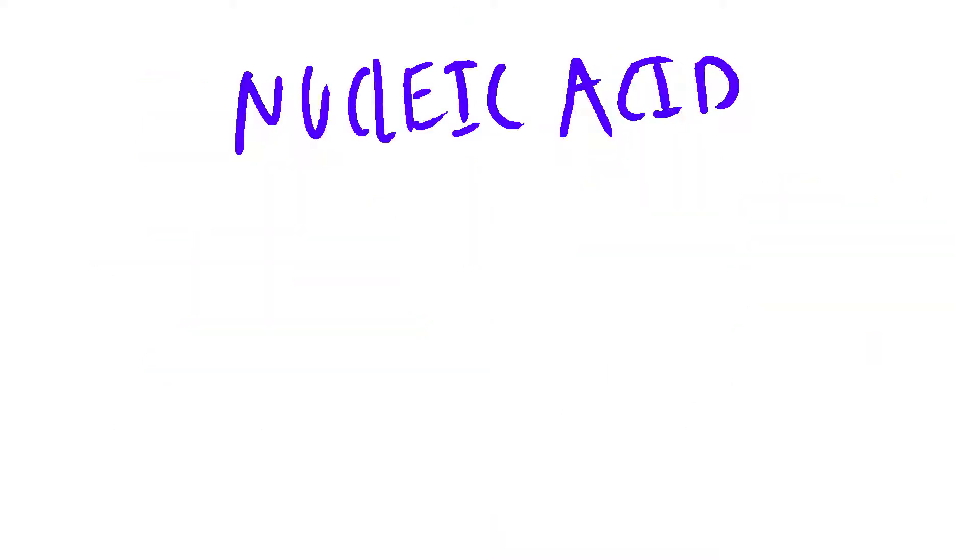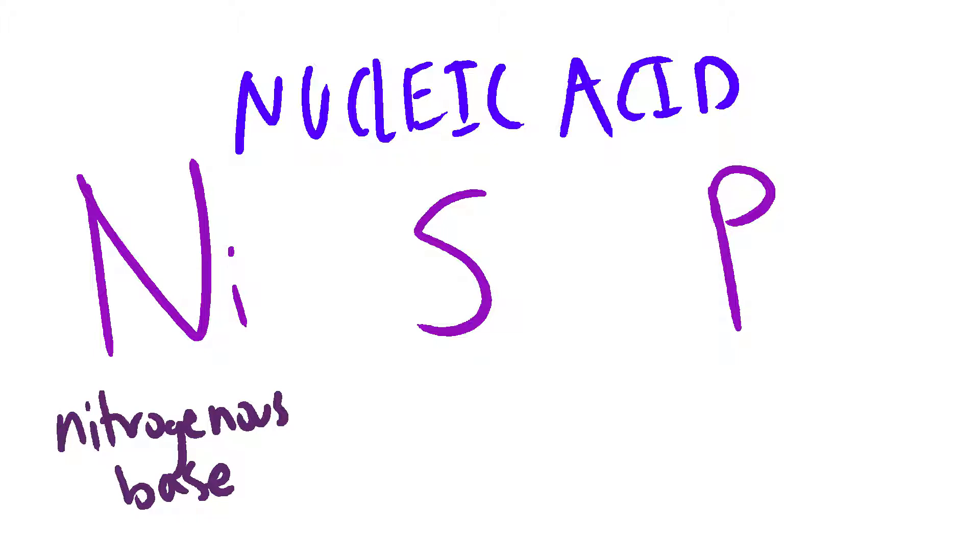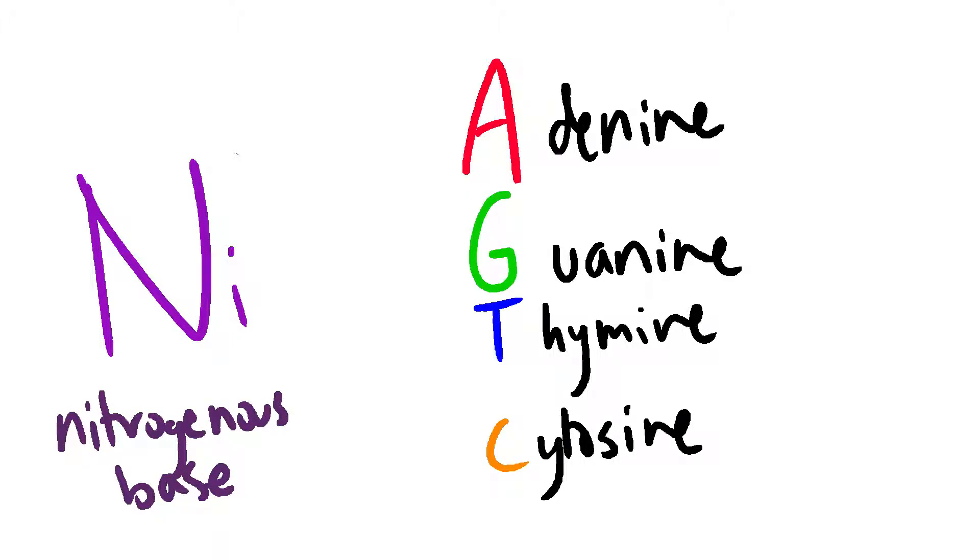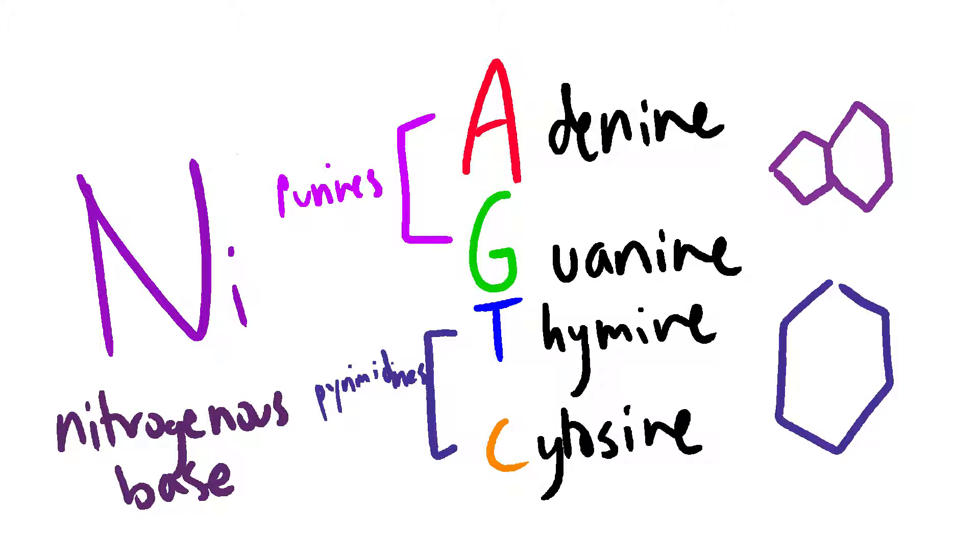Another type of polymer are nucleic acids. Remember them as NISP: nitrogen is base connected to a sugar connected to a phosphate. There are four nitrogenous bases in DNA: adenine, thymine, cytosine, and guanine. Adenine and guanine are purines, which are shaped like this, while thymine and cytosine are pyrimidines, which are shaped like this. Pure as gold is a great way to remember this. Pure for purine, as for adenine, and gold for guanine.